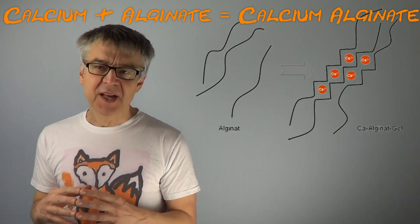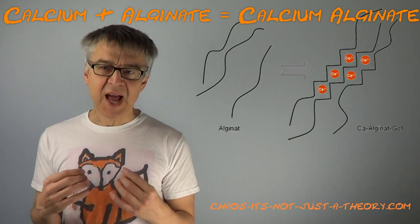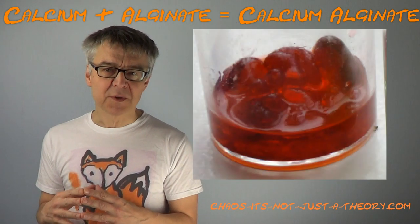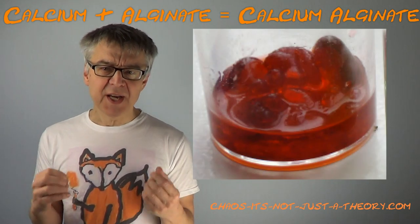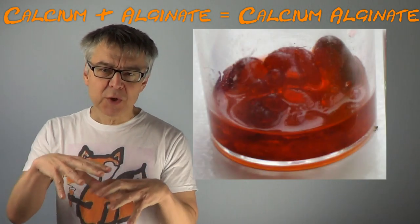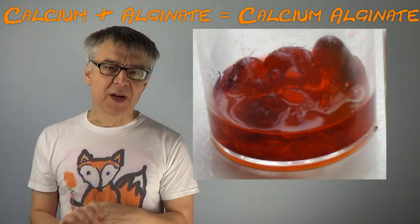When calcium comes together with sodium alginate, another chemical, calcium alginate, will be formed. It's a very gummy gel-like substance which acts as a shell of our liquid filling.